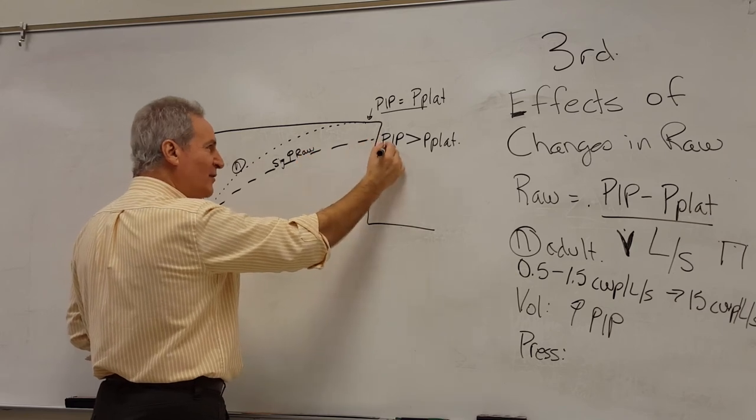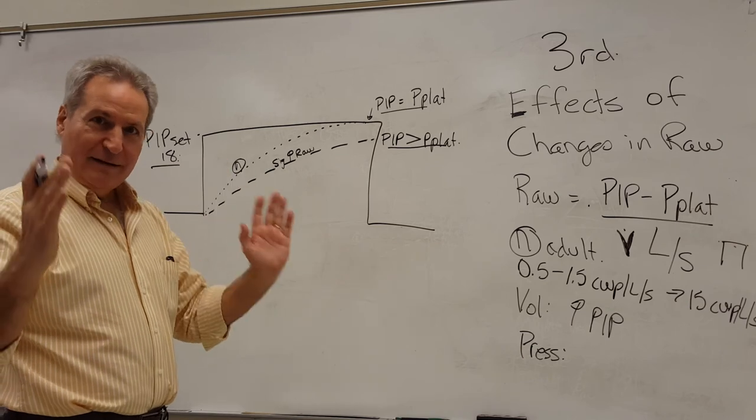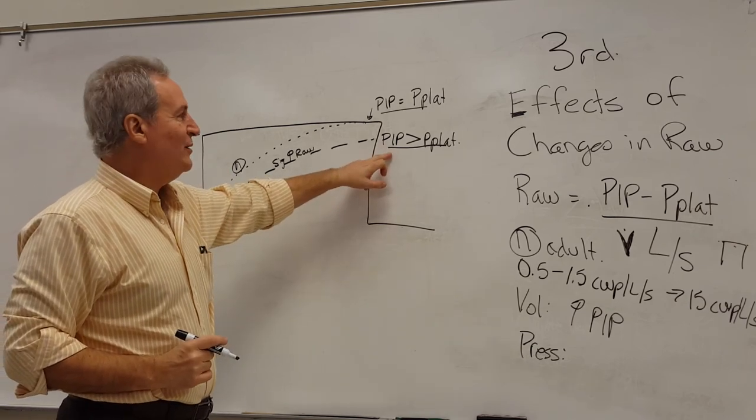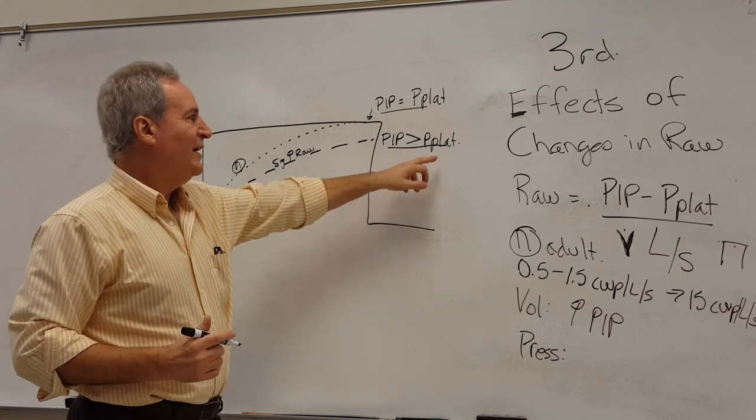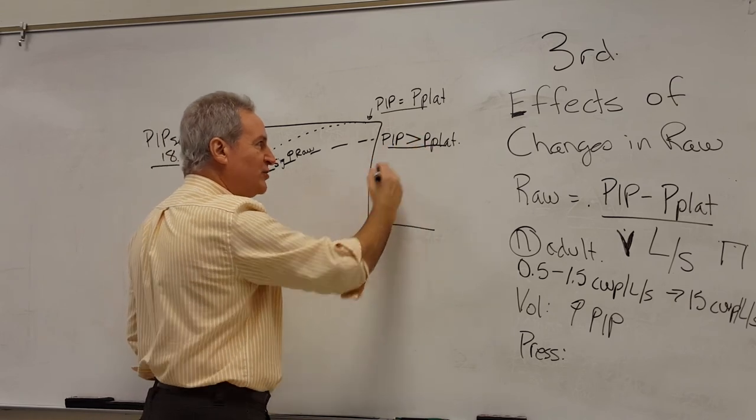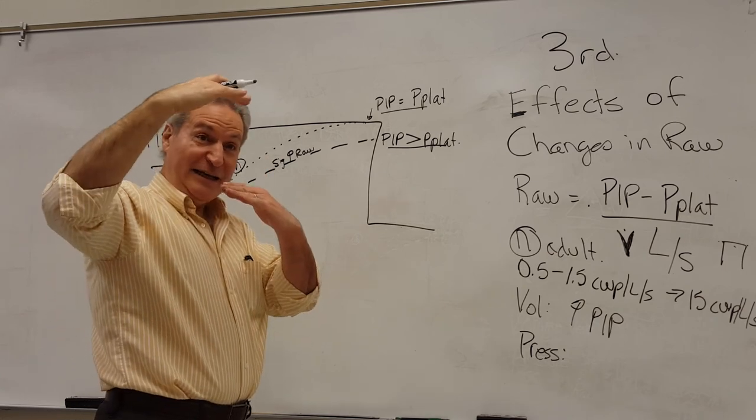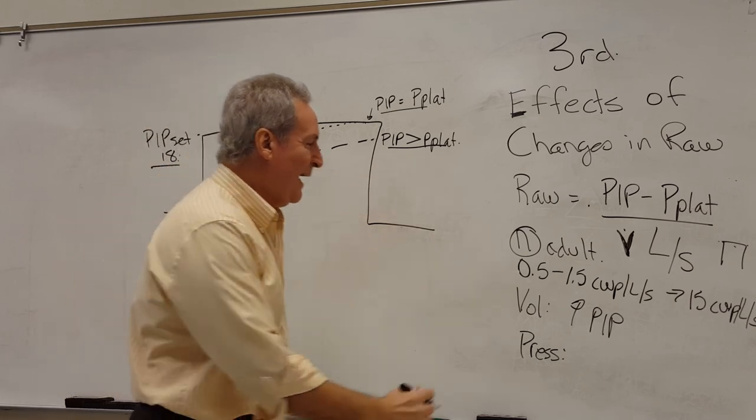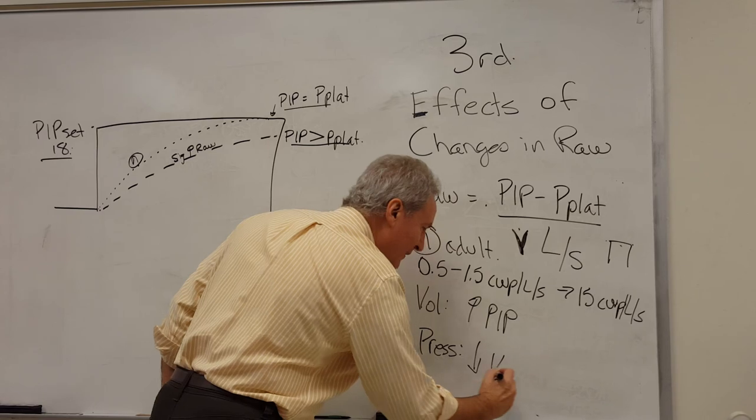The end result is by the time inspiration is done, we don't have equilibration. We still have a pressure gradient. But our time is up and the ventilator cycles off. That pressure difference between PIP and P-alv means that's potential volume. We would still get flow and volume entering the lungs, but that doesn't happen. The result is a decrease in the tidal volume.